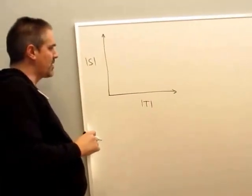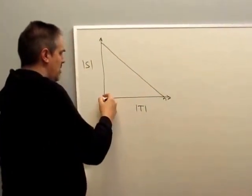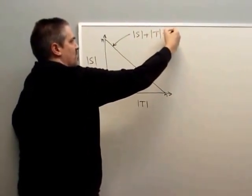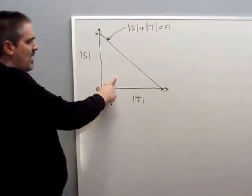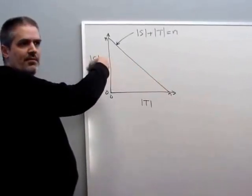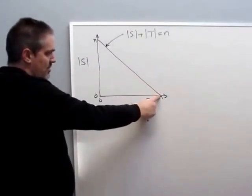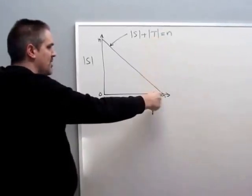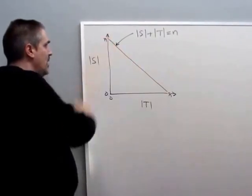Because there are only n nodes to begin with, we know we'll stay inside this triangle — this is the line S plus T equals n. We don't stay on this line necessarily because some of the time there are nodes in U. When we begin, everything is in T, and there's nothing in S. Then time goes by, we ask questions, get yeses and nos, and gradually move things into S, and end up over here with everything in S.